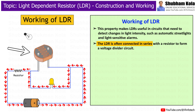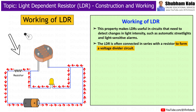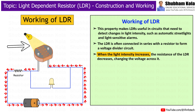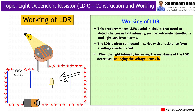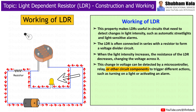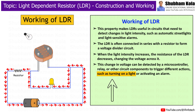The LDR is often connected in series with a resistor to form a voltage divider circuit. When light intensity increases, the resistance of the LDR decreases, changing the voltage across it. This change in voltage can be detected by a microcontroller, relay, or other circuit components to trigger different actions such as turning on a light or activating an alarm.